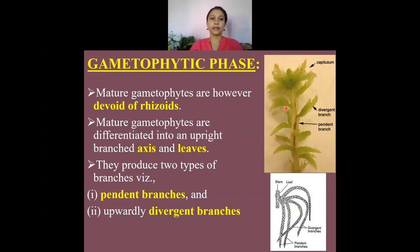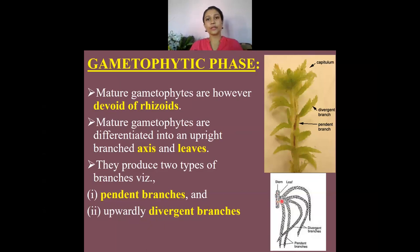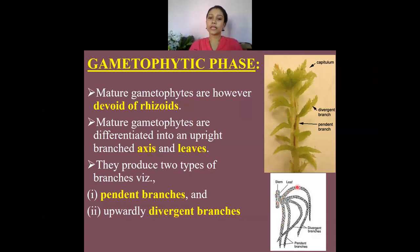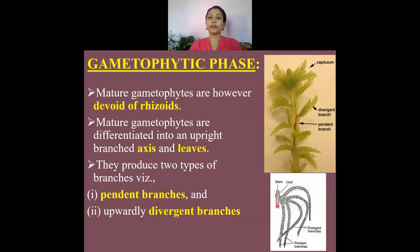The mature gametophytic plant body is differentiated into two parts: an upright stem and leaves. The plant also produces branches of two different types. The first type is pendant branches, which run parallel along the main axis or stem, and the second type are upwardly divergent branches. These are the two branch types present along the main stem of Sphagnum.